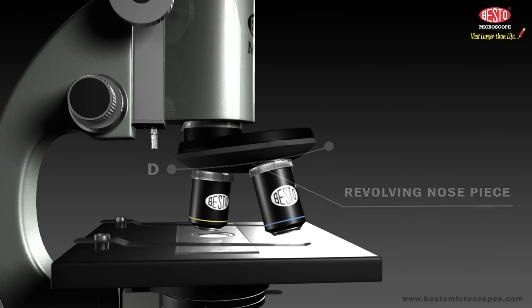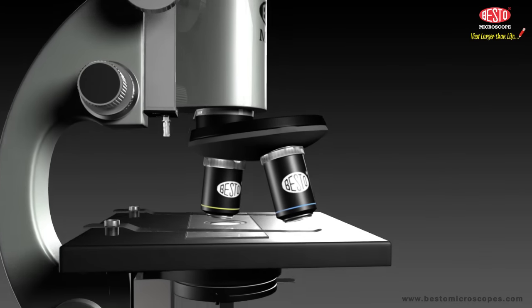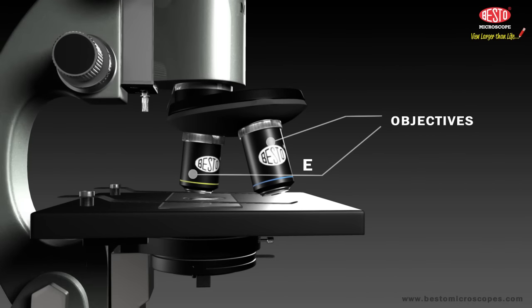E. The objectives are the parts at the bottom of the body tube closest to the sample you are examining. Each objective has a lens and a tube-like holder, the mount. The longer mounts hold the stronger lenses, the high power lenses.